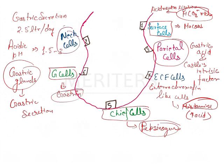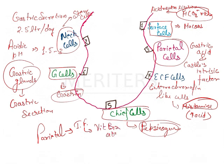The mucus neck cells house the stem cells. Parietal cells produce Castle's intrinsic factor, which is important for vitamin B12 absorption. Vitamin B12 is referred to as the extrinsic factor.